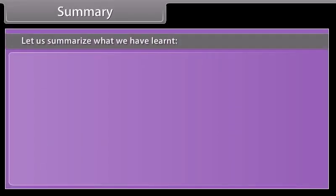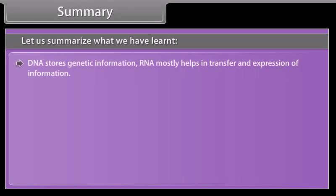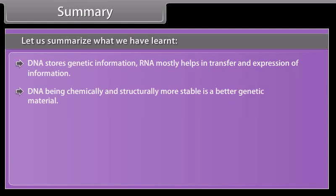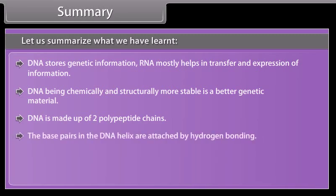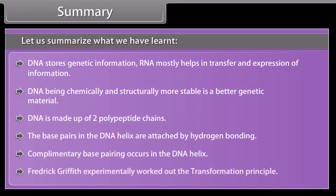Summary. Let us summarize what we have learned. DNA stores genetic information. RNA mostly helps in the transfer and expression of information. DNA, being chemically and structurally more stable, is a better genetic material. DNA is made up of two polynucleotide chains. The base pairs in the DNA helix are attached by hydrogen bonding. Complementary base pairing occurs in the DNA helix. Frederick Griffith experimentally worked out the transformation principle.